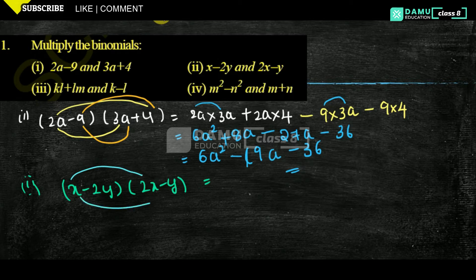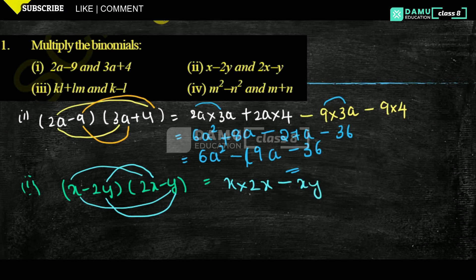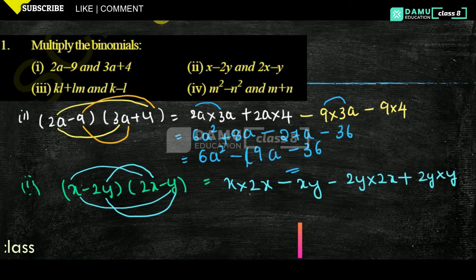First with the first one, then first with the second one, second with the first one, again second with the second one — like that we have to multiply. So: x into 2x, minus, because plus into minus is minus, x into y. Then minus into plus will become minus 2y into 2x, then minus into minus will become plus 2y into y.